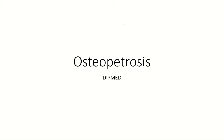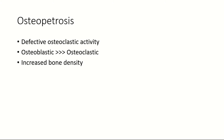Hello everybody. Today in this session we're going to learn about osteopetrosis. In osteopetrosis there is defective osteoclastic activity. We know that bone is under constant turnover, which means old bones are getting destroyed and in place of those, new bones are getting formed. It is the osteoclast cells that are destroying the old bones.